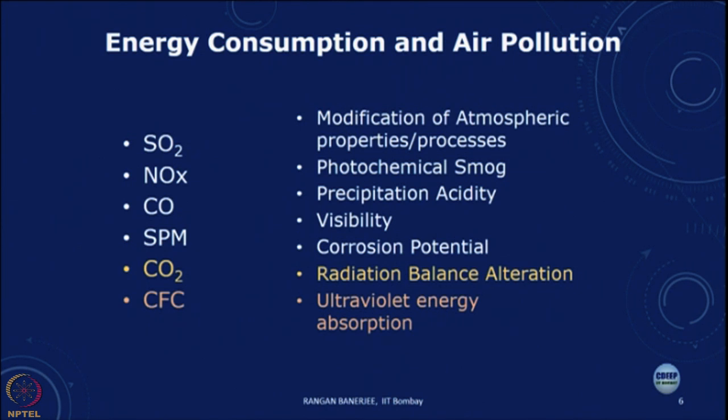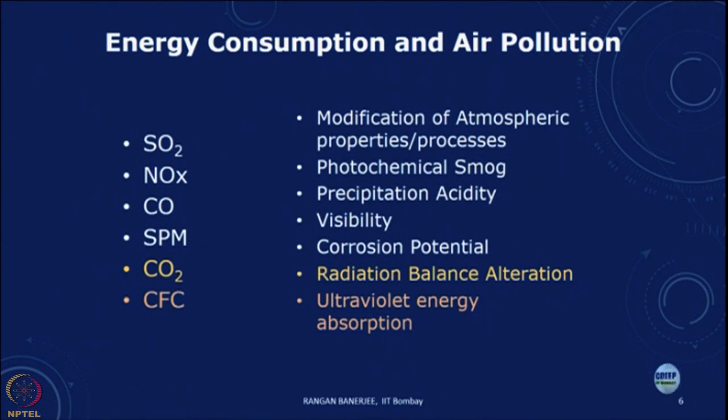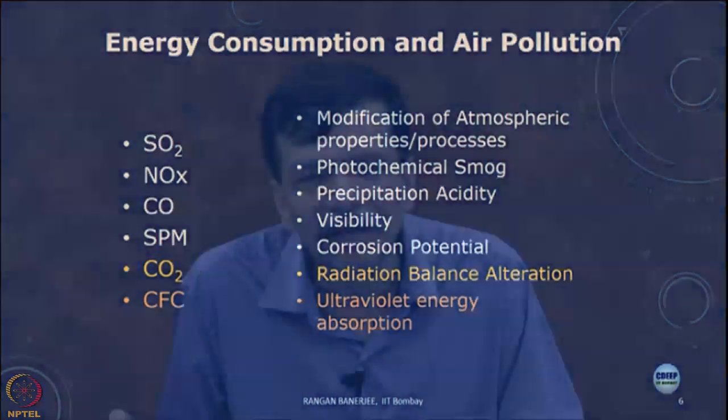Among the pollutants from fossil fuels: sulphur dioxide comes from industrial processes and power plants; nitric oxides again from power plants and industry; carbon monoxide from vehicles as well as industrial processes; and solid particulate matter, where it is also important to consider particle size range. We talk of PM 2.5 and PM 5 — the smaller the particle size, the larger the health impact. This particulate matter contributes to air pollution, urban air quality, and respiratory health impacts. Carbon dioxide and chlorofluorocarbons are global pollutants, and all of these have different kinds of impacts.